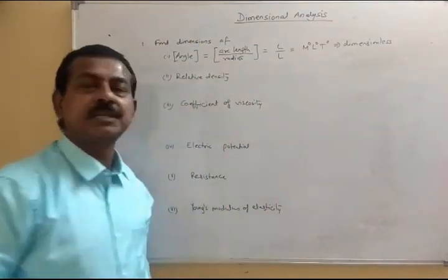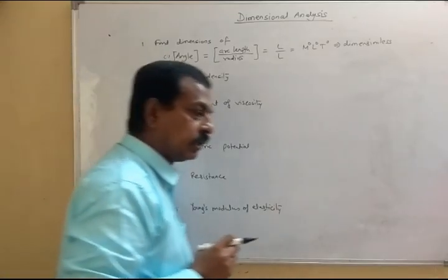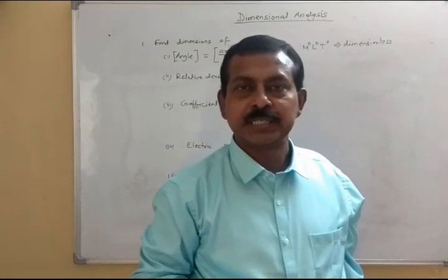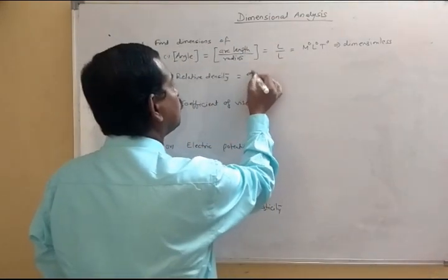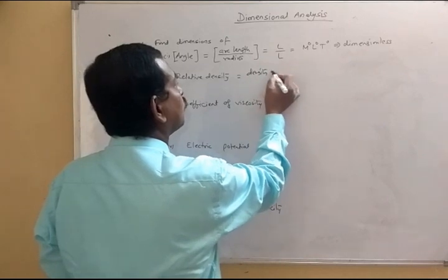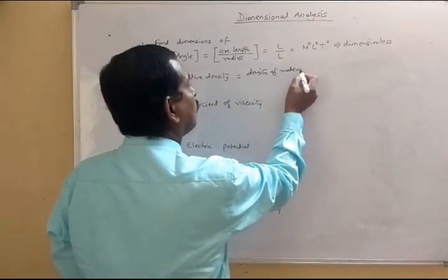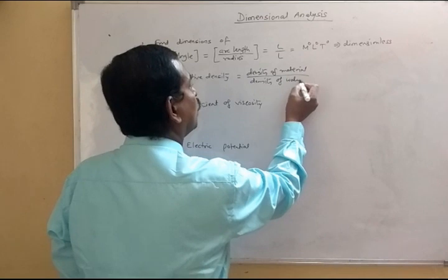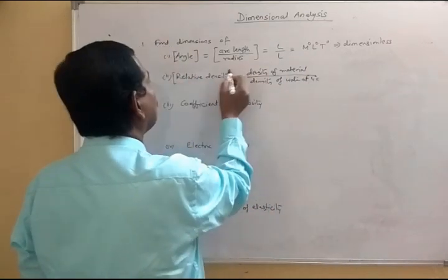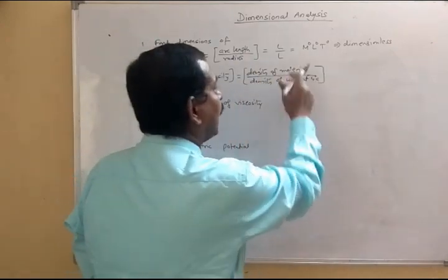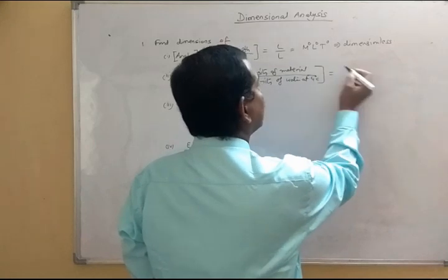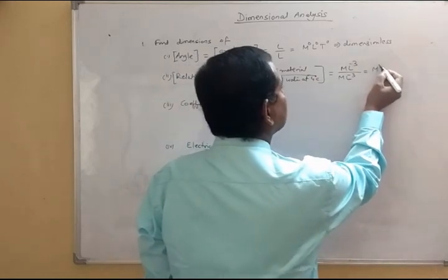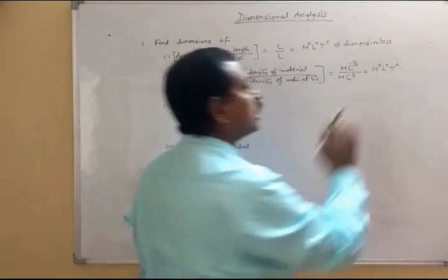The second term is relative density. Relative density is the ratio of the density of the material to the density of water at 4 degrees Celsius. As it is the density term, it is mass per unit volume, so it is M L⁻³. Since both densities have the same dimension, the ratio is M⁰ L⁰ T⁰ — it is dimensionless.